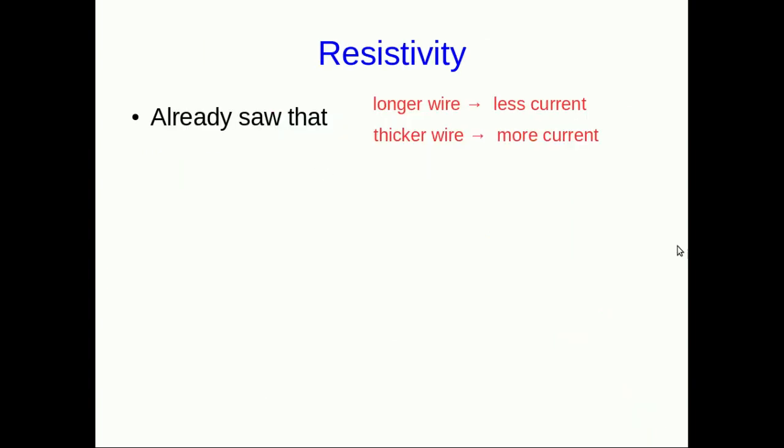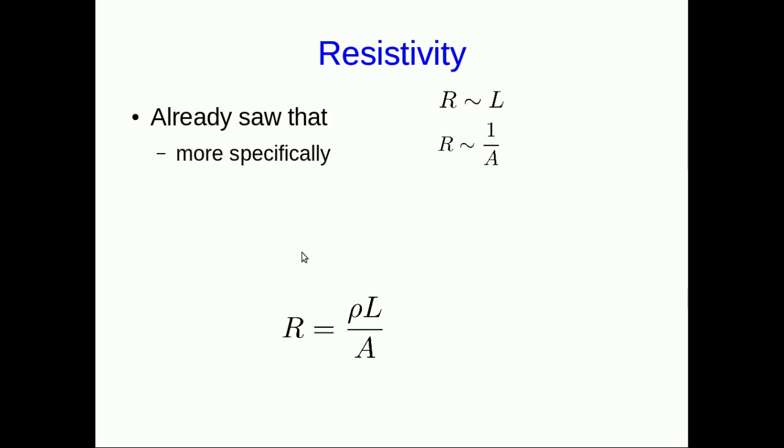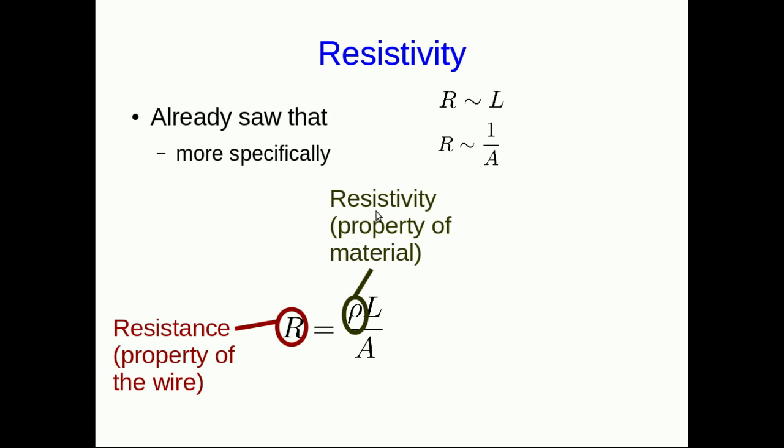The one final piece of this is the role that the material plays. We already saw that longer wire means less current, or in other words, a longer wire must result in a larger resistance. Thicker wire means more current, or in other words, a smaller resistance. So it turns out that the resistance is proportional to the length of the wire, and inversely proportional to the cross-sectional area of the wire. So that means R is proportional to L over A. There has to be a proportionality constant. So there's the resistance, and various other properties of the wire, its length and cross-sectional area, factor into calculating it. Whereas this variable rho refers to what's called the resistivity, which is a property of the material the wire is made out of.